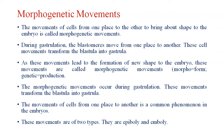During gastrulation, the blastomeres move from one place to another. The cells' movements transform the blastula into gastrula. This is also called gastrulation, as these movements lead to the formation of a new shape to the embryo. These movements are called morphogenetic movements — morpho refers to form, gene refers to reproduction.